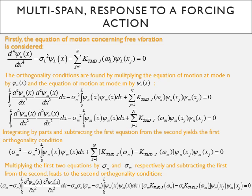When considering this beam's response to a forcing action we must first determine the orthogonality conditions. These are found by considering the beam in free vibration at two different modes. The first orthogonality condition is found by multiplying the free vibration equation of motion at mode n by φₘ and the equation of motion at mode m by φ at n.